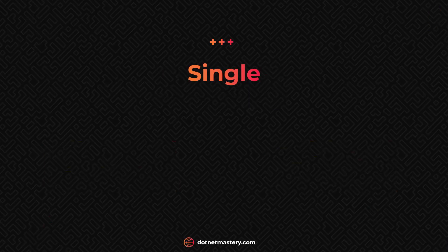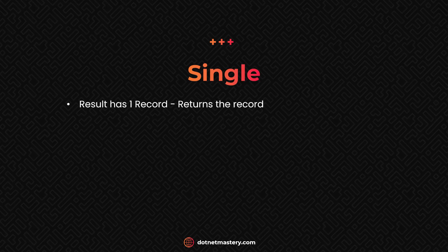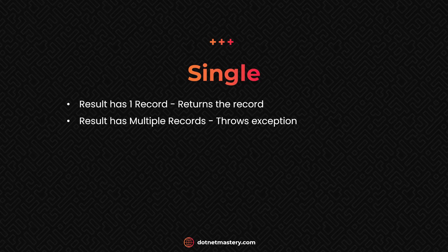Let me first start with Single. The name here is self-explanatory — it is used to retrieve a single record. We will examine three scenarios. If the result has only one record, Single will return that record. If the result has multiple records, Single will throw an exception. And also, if the result has no records, Single will throw an exception.